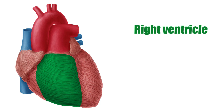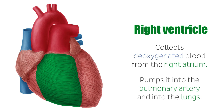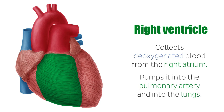The right ventricle collects deoxygenated blood from the right atrium as the tricuspid valve relaxes, and pumps it via rhythmic contractions through the pulmonary valve in its roof and into the pulmonary trunk, which passes the blood into the pulmonary artery and into the lungs.